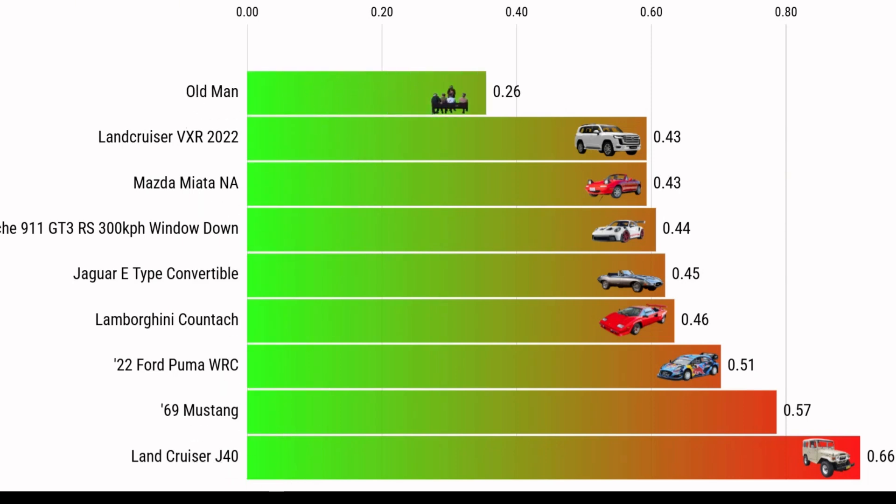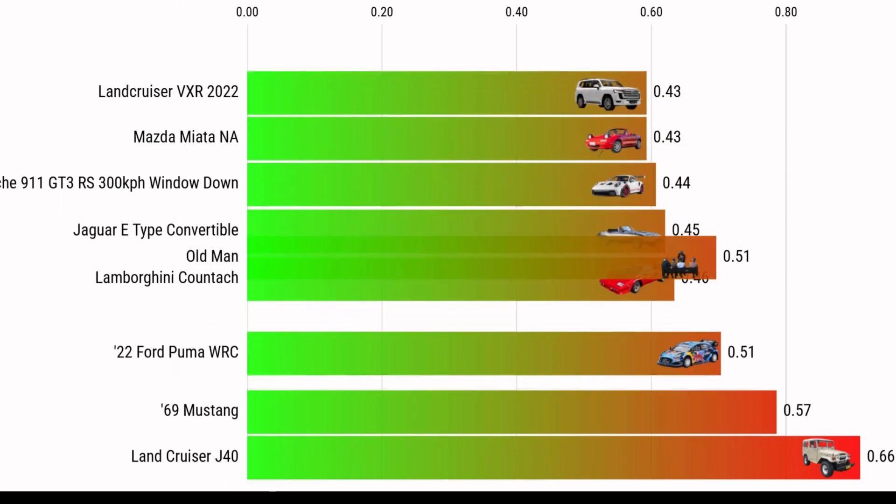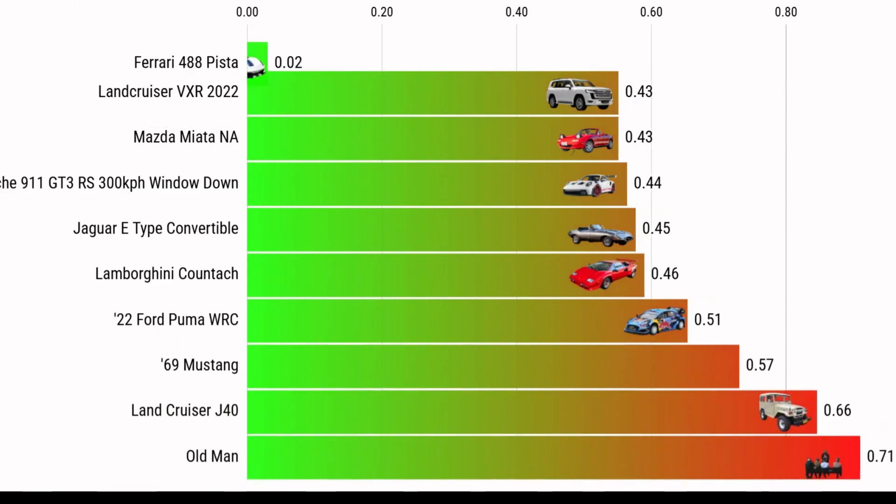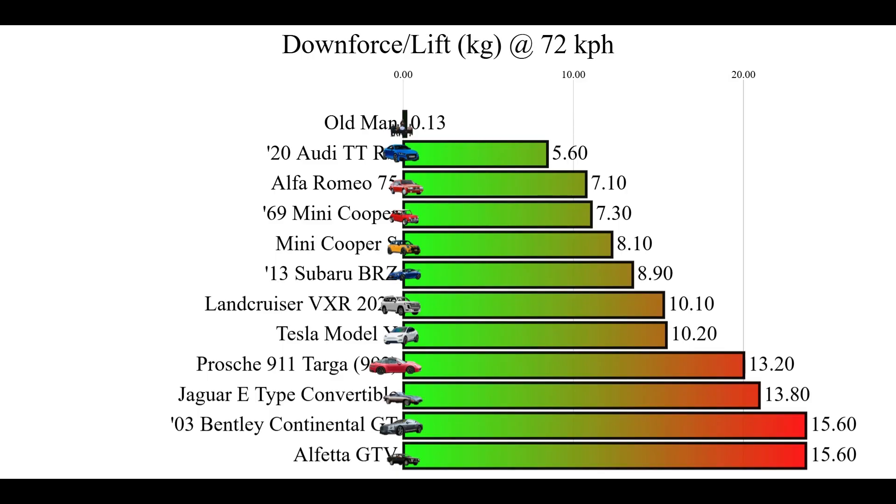Now, the moment of truth. Who produces the least drag and the most downforce? The old man comes in with a drag coefficient of 0.71, but the Ferrari beats him with 0.32, which is really good for a supercar. And while the old man produces a respectable 0.47 kilos of lift, the Ferrari produces 6.1 kilos of downforce. So it's now clear that Ferrari designed the 488 to be more aerodynamic than an old man. Peace, amigos.